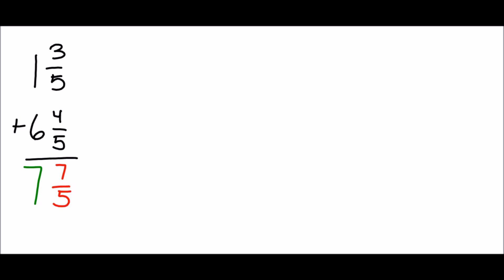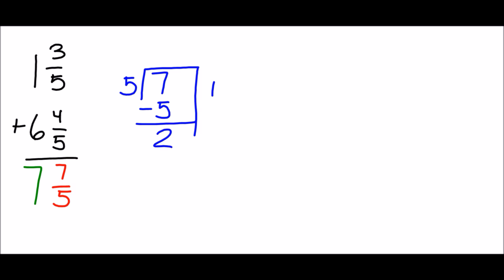Seven-fifths is an improper fraction — a fraction that's more than one. So we're going to take that improper fraction and change it into a mixed number. We take seven divided by five, which is one. Subtract five, and we get two left over. That two is two-fifths because we're working with fifths, so seven-fifths becomes one and two-fifths.